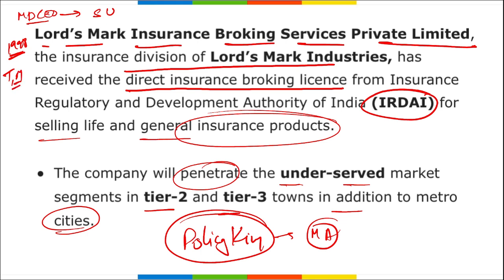Policy King is a mobile application through which customers can compare available insurance offers — term life, health, and motor insurance — and choose as per their need. With the direct insurance brokering license from IRDAI, Loard Smart can now sell and offer general insurance, health insurance, and motor insurance to individual customers.